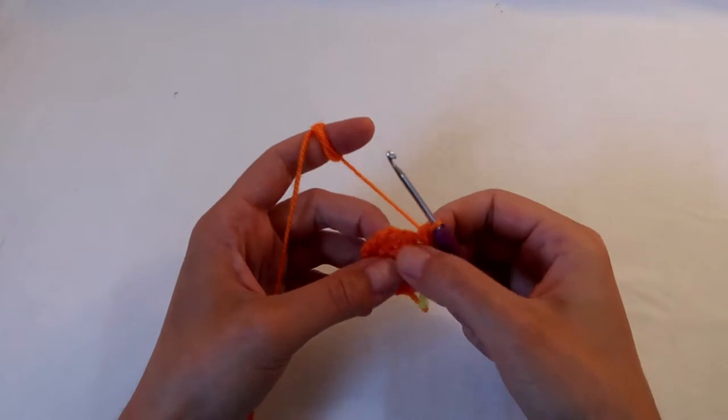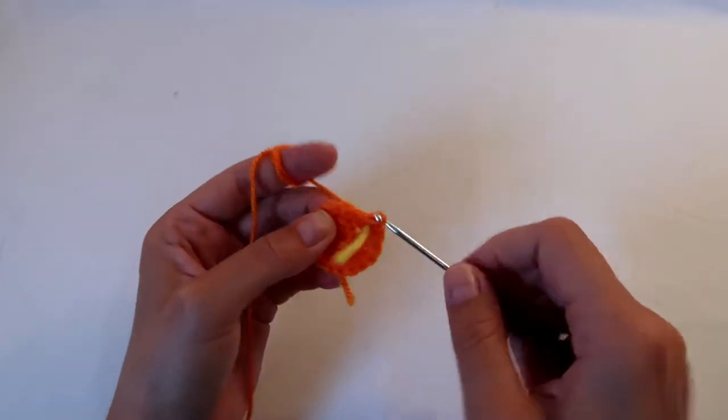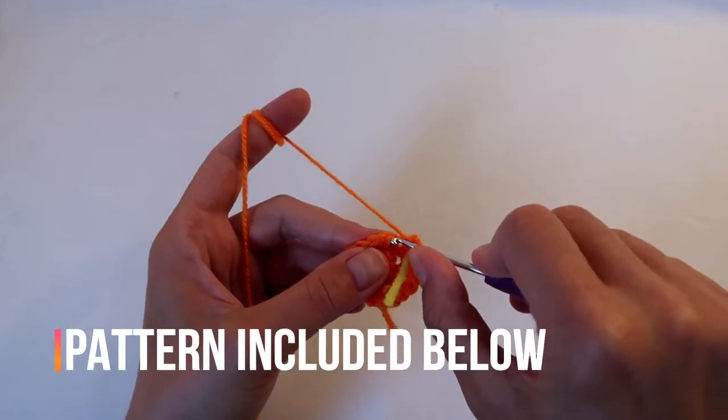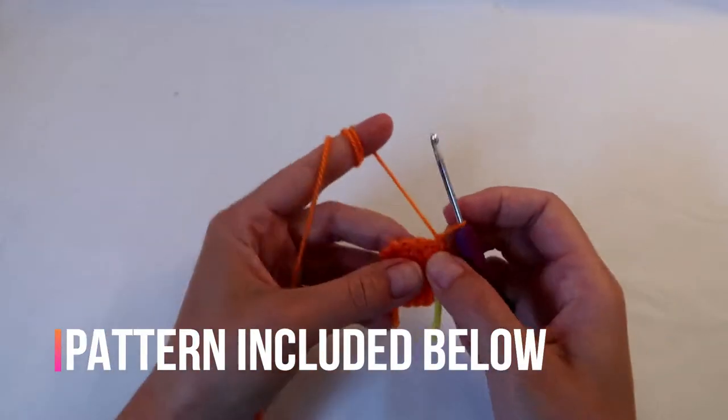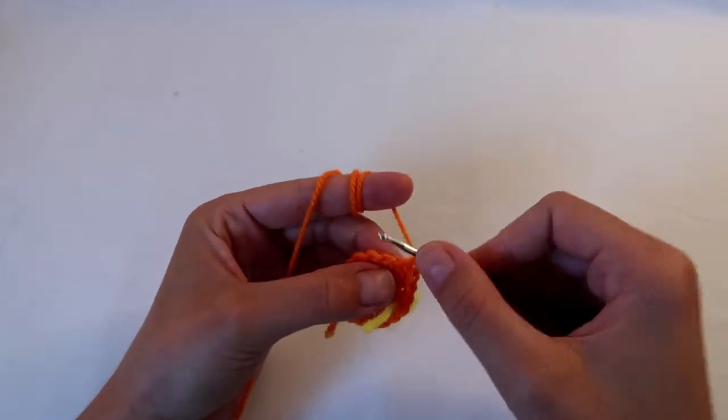The next row will be 2 stitches with 1 double crochet in each, and then followed by 1 increase. And basically this is going to be the pattern for increasing, so we'll just add 1 double crochet in each row, and I'm going to meet you back here when I get to row 10.